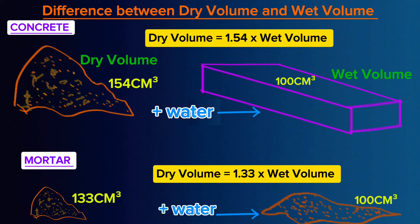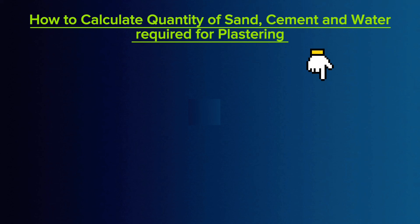We shall use this concept of dry volume and wet volume in other upcoming videos. That's the end of this video about the difference between dry volume and wet volume. I hope you get something from it. Watch the next video about how to calculate the quantity of sand, cement and water required for plastering.